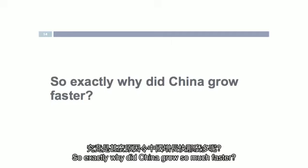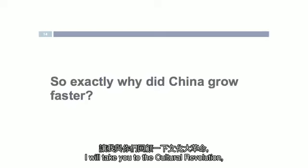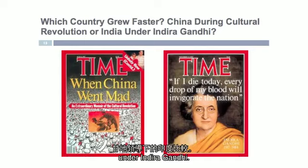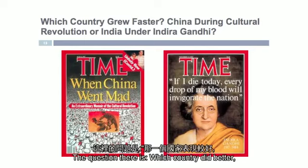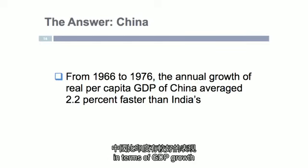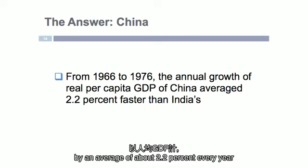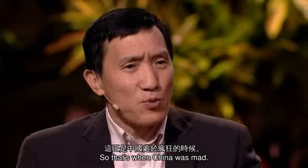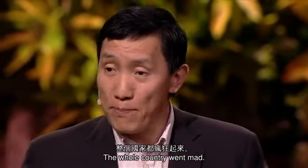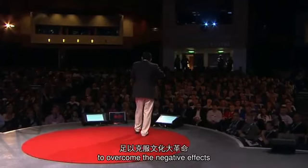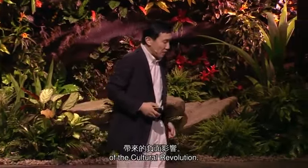So exactly why did China grow so much faster? If you look at China during the Cultural Revolution — when China went mad — and compare its performance with India under Indira Gandhi, it turns out that even during the Cultural Revolution, China outperformed India in terms of GDP growth by an average of about 2.2% per year in per capita GDP. That must mean the country had something so advantageous that it overcame the negative effects of the Cultural Revolution.